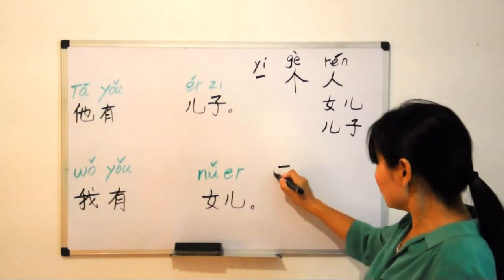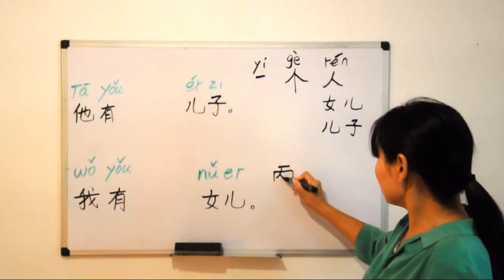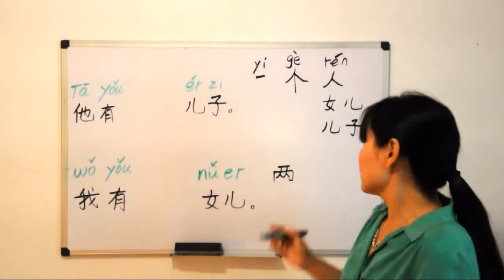Horizontal, vertical, horizontal, bending, hook, left stroke, right stroke, left stroke, left stroke, right stroke. This is 两, meaning two.